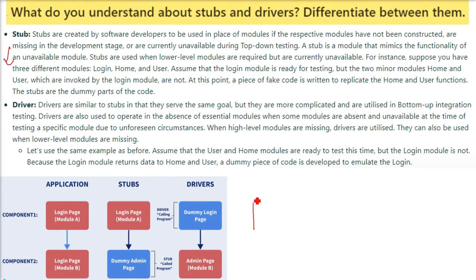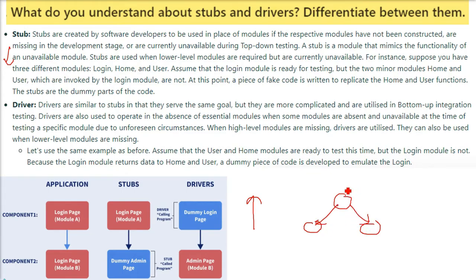That stub code will eventually be thrown away — it is just written for testing purposes. Stubs are required when we are doing top-down testing; when we are going bottom-up, we require drivers. In unforeseen circumstances where the high-level module which calls other modules is not prepared but the lower-level modules are already made, we have to write a driver.